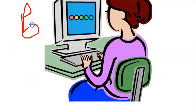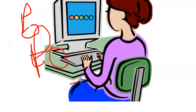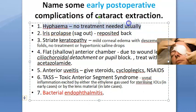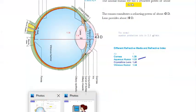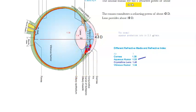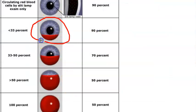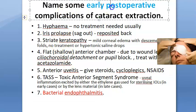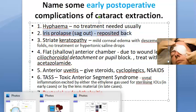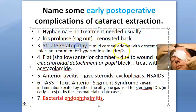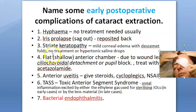Now we are done with preoperative and operative complications. After surgery — post-operative — there are early and late complications. Early post-operative complications: hyphema means blood in the anterior chamber. Usually no treatment is required; it can get spontaneously absorbed, though they might have to treat it. Also, iris prolapse — the iris can sag out and needs to be reposited back.